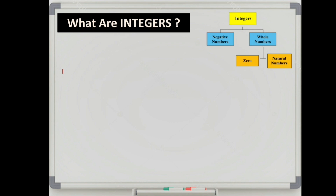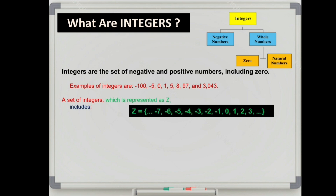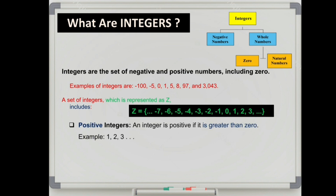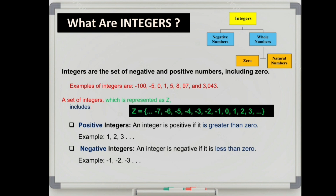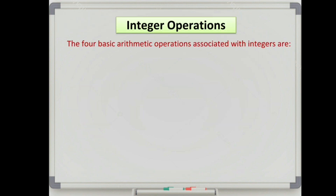Integers are the set of negative and positive numbers including 0. A set of integers are represented as capital letter Z. A positive integer is greater than 0 and a negative integer is always less than 0. 0 is defined as neither positive nor negative integer. The four basic arithmetic operations associated with integers are addition, subtraction, multiplication, and division of integers.